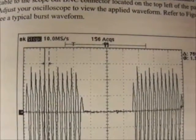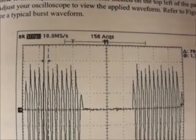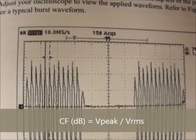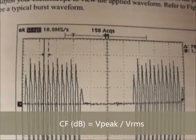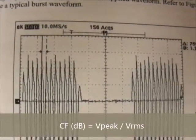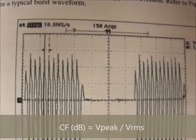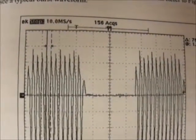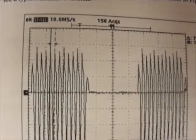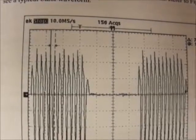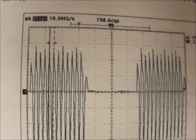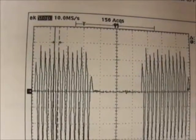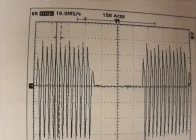Crest Factor is the ratio of the peak value to the root mean square or RMS value of a waveform — the peak-to-RMS ratio. It is the figure of merit or performance indicator of the device, which describes the AC waveform's signal and shape.